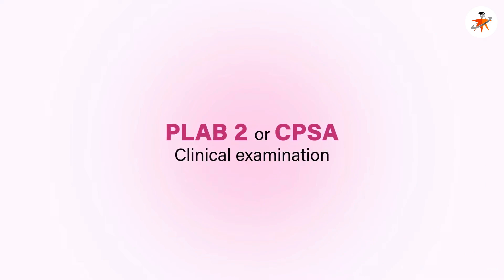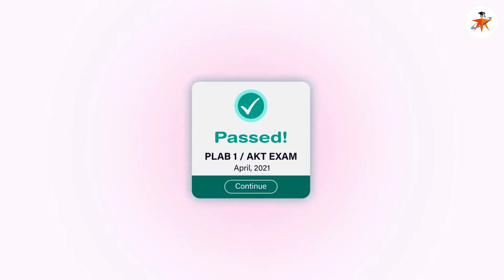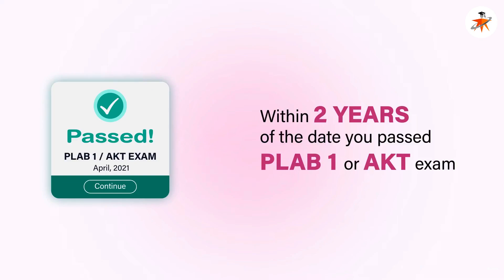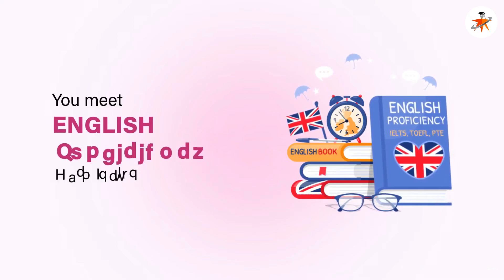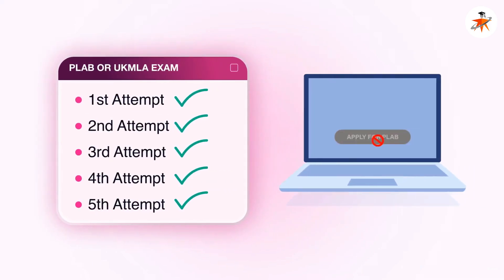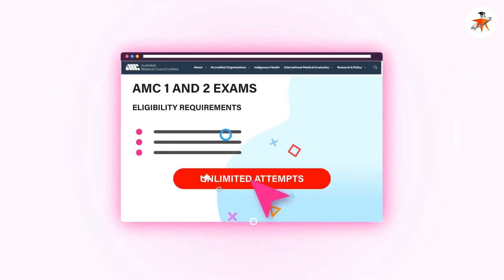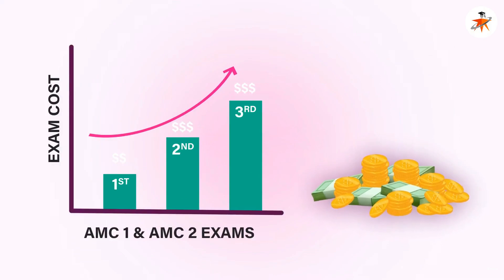For PLAB 2 or CPSA clinical examination, you can only apply after successfully passing your PLAB 1 or AKT exam, and you must pass it within two years of passing PLAB 1 or AKT. You must also ensure that you meet English proficiency exam requirements. If you have already used more than four attempts for either part of PLAB or UK MLA, you are no longer eligible to apply. For AMC exams, although there are unlimited attempts allowed for AMC Part 1 and Part 2, provided you meet all eligibility requirements, the cost factor means that a second or third attempt may take a significant toll.